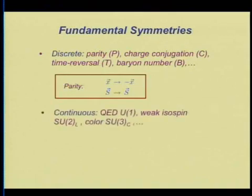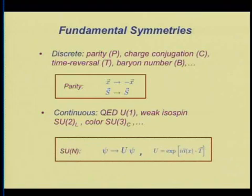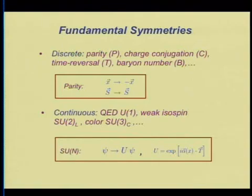The other class are the continuous symmetries — things like quantum electrodynamics have U(1) symmetry, the weak isospin of the standard model, color SU(3), et cetera. These symmetries correspond to transformations of fundamental fields where the characteristic parameter is a continuous function of space-time, alpha. The presence and violation of these two kinds of symmetries are key to understanding the origin of baryonic matter.